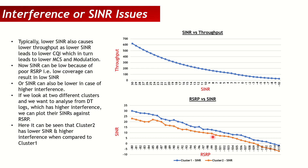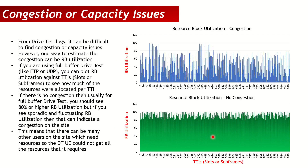Now let's move to a more interesting topic — how to estimate congestion or capacity issues using drive test log files. Remember, a drive test log file is from the UE side, so it's difficult to determine whether low throughput is mainly due to congestion on the site or a capacity/bandwidth limitation. One way to estimate this is to plot resource block (RB) utilization over time — against frames, slots, or per second.